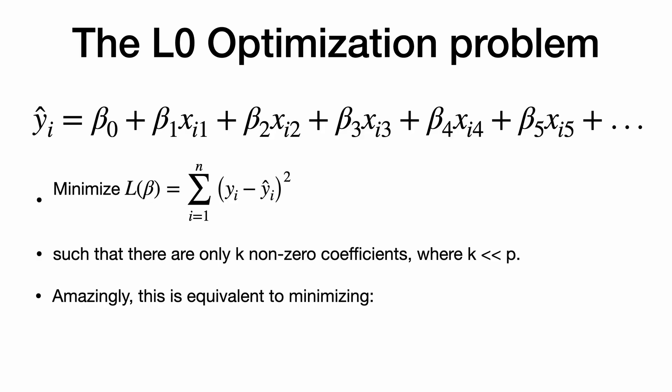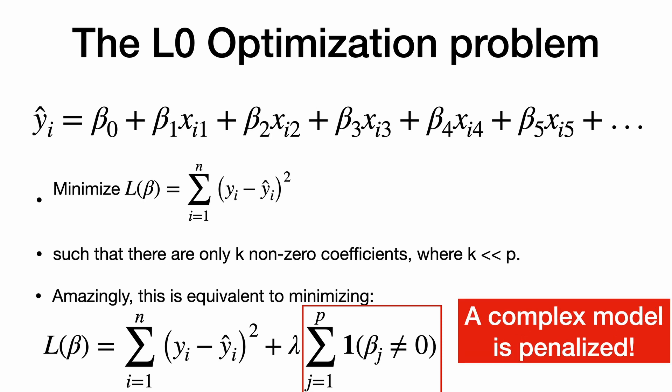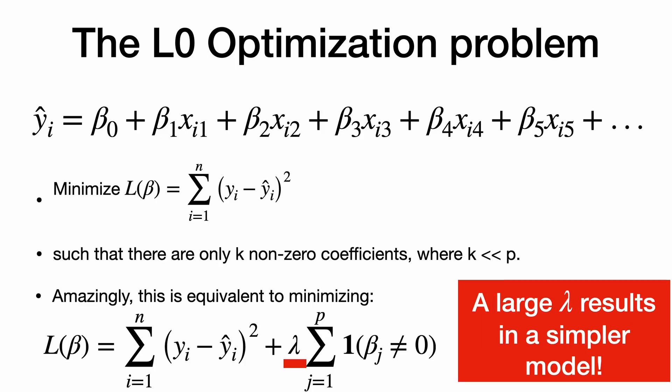Our computers don't have time to fit all these models and check how well they predict new outcomes. But amazingly, this is equivalent to minimizing this one equation, the sum of the squared residuals, plus lambda times the sum of an indicator of whether each variable is zero. This counts how many non-zero coefficients there are. A complex model with lots of non-zero coefficients is penalized. And lambda determines how much we penalize having more predictors. A large lambda results in a simpler model.